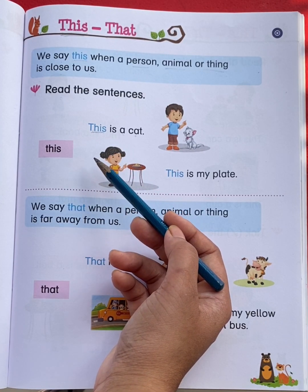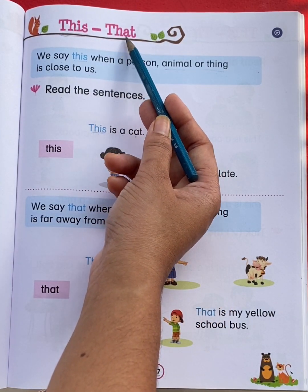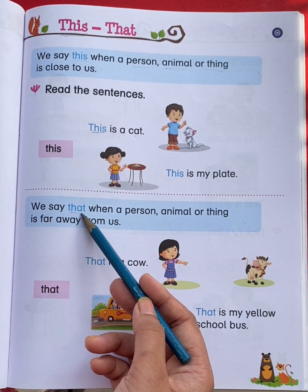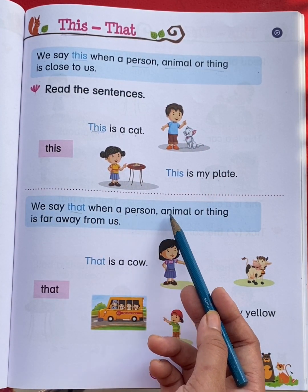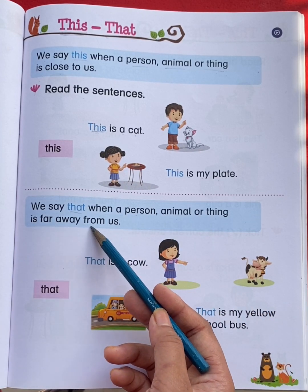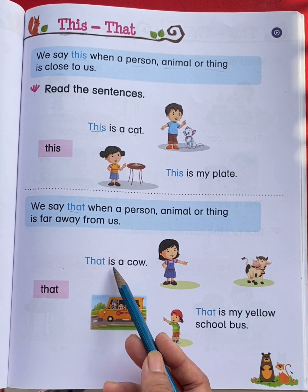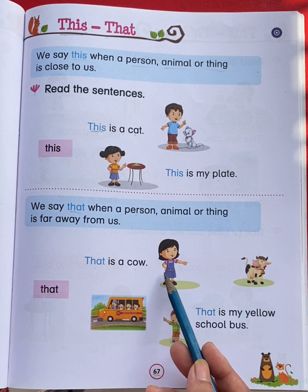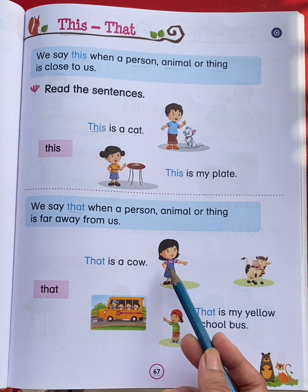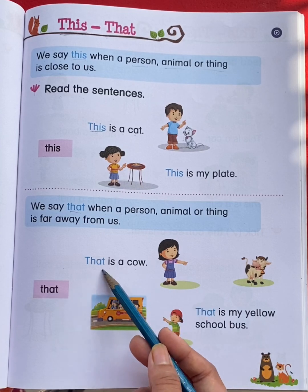Next, we will learn about 'that'. T-H-A-T, that. We say 'that' when a person, animal or thing is far away from us. Now look here — that is a cow. Can you see the cow? Yes, the cow is far away from the girl, so that is a cow.